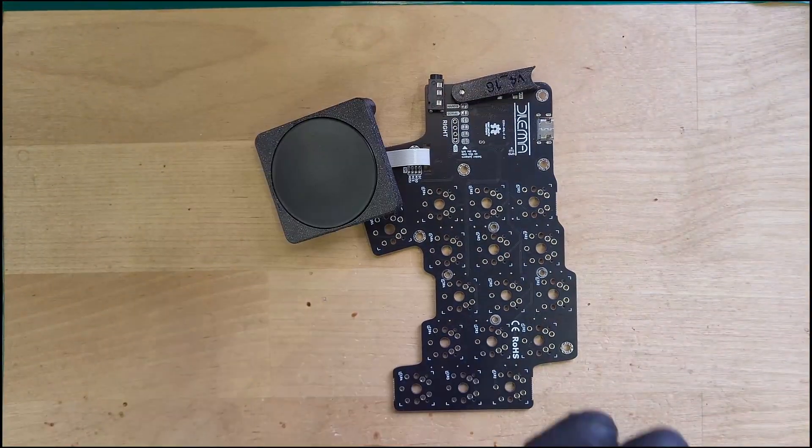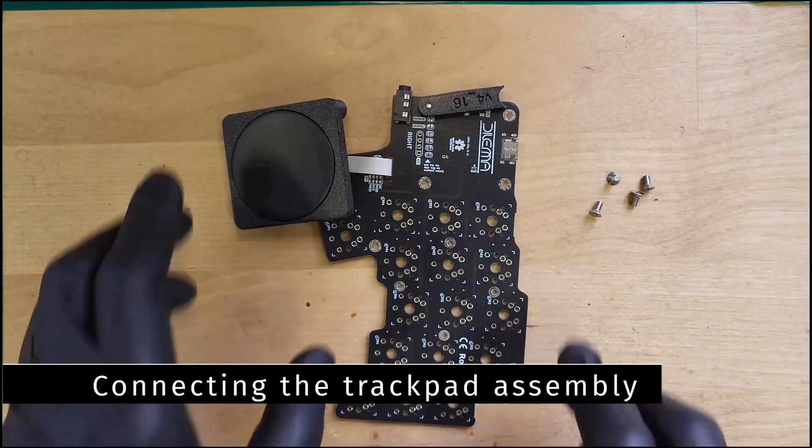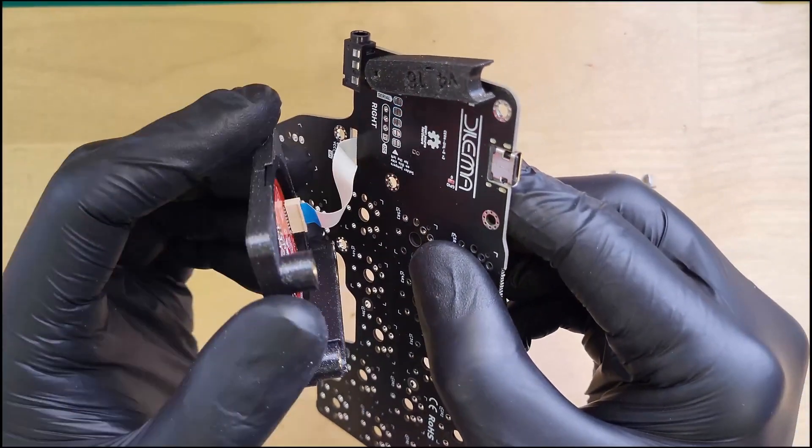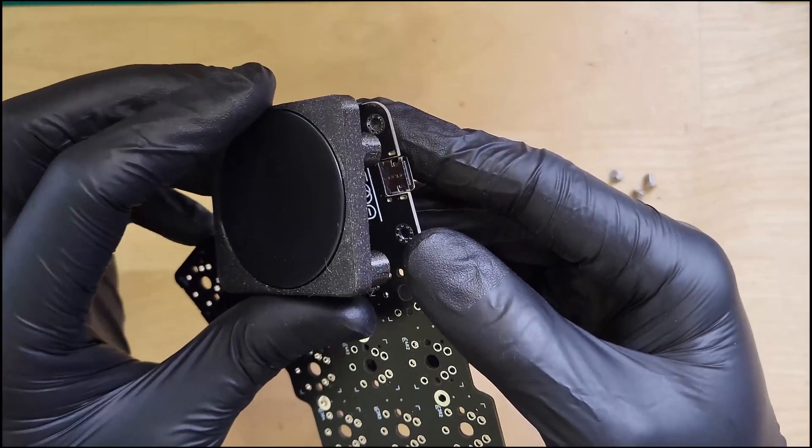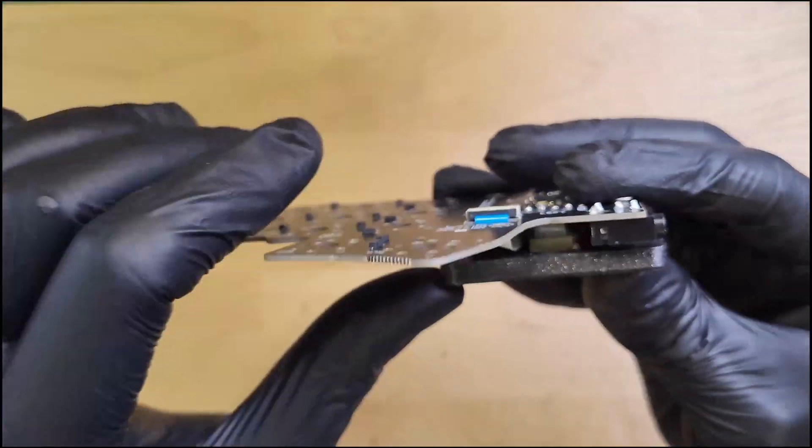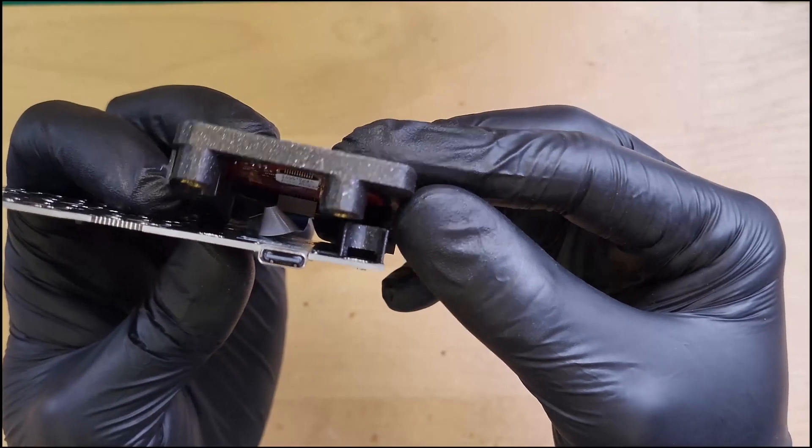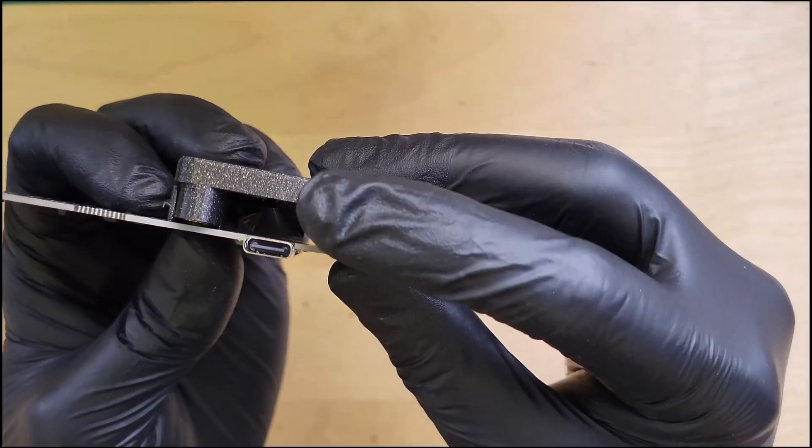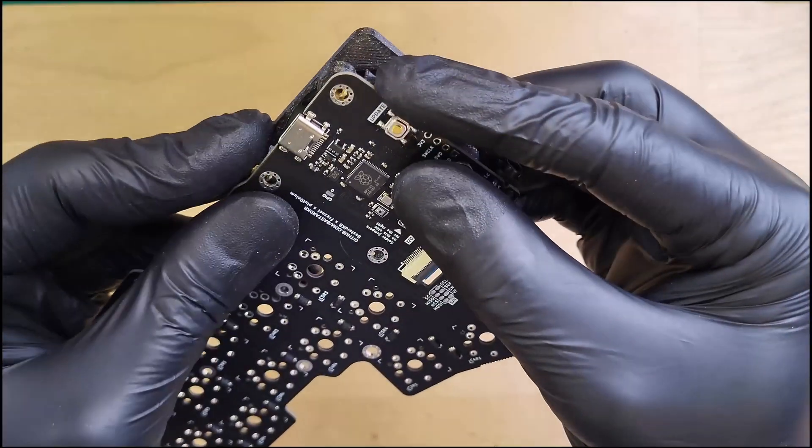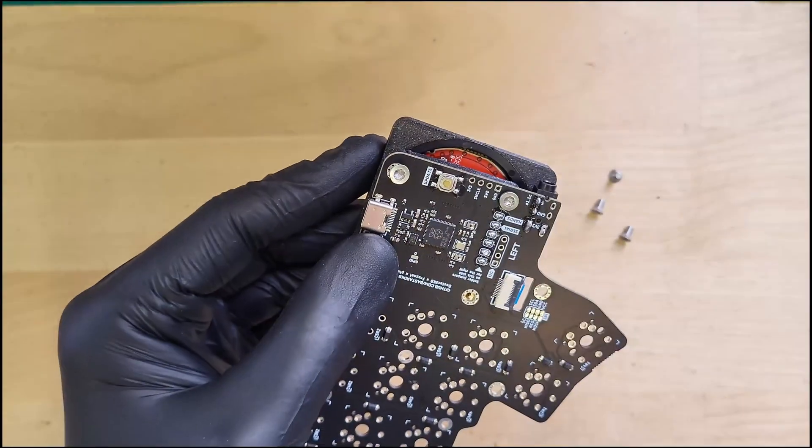We will now secure the trackpad assembly onto the PCB using some screws. Carefully rotate the assembly 180 degrees, taking care not to damage the ribbon cable. Make sure that the assembly fits in the parts that we previously installed on the PCB. Install and tighten all the screws.